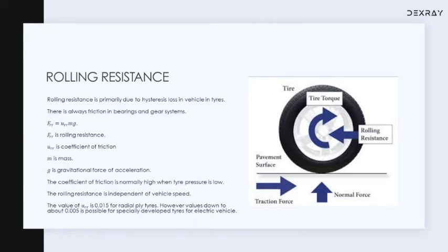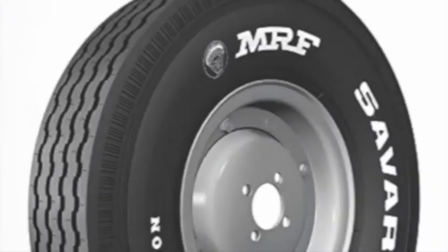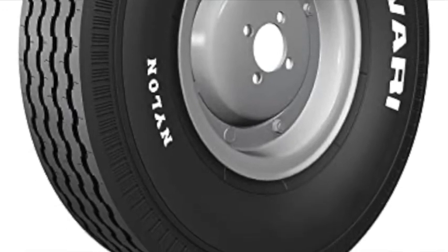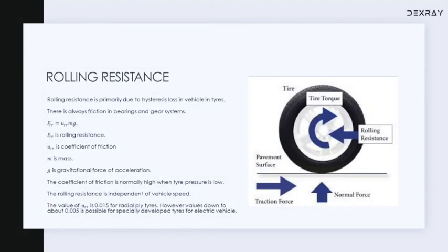The coefficient of friction also depends upon the type of tire. The radial plate tire shown here has a coefficient of friction of 0.015. There are some specially developed tires for electric vehicles for which the coefficient of friction has been brought down to near 0.005, which is very low. In short, rolling resistance only depends upon the coefficient of friction and mass of the vehicle — it has no relationship with the velocity.